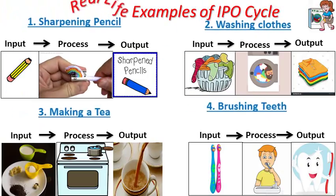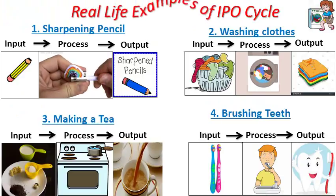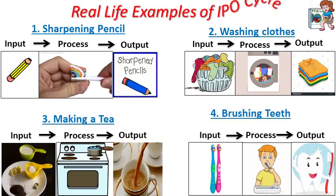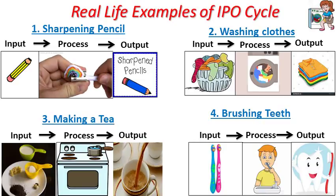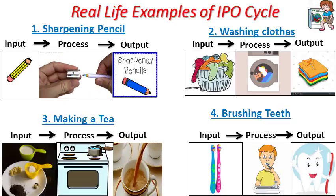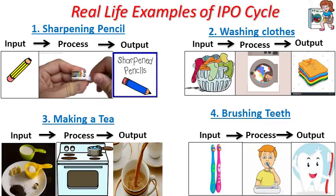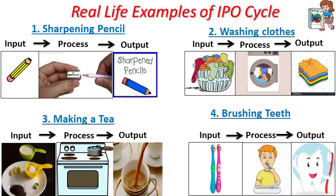Let us see some real life examples of IPO. First example: sharpening a pencil. Input is a blunt pencil, processing is sharpening, and output is a sharpened pencil.